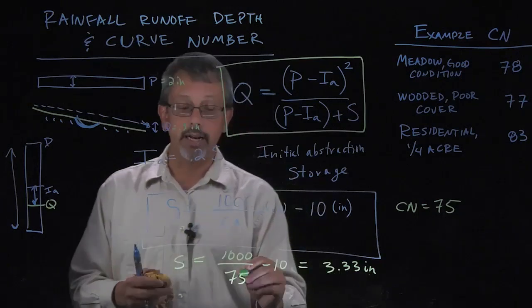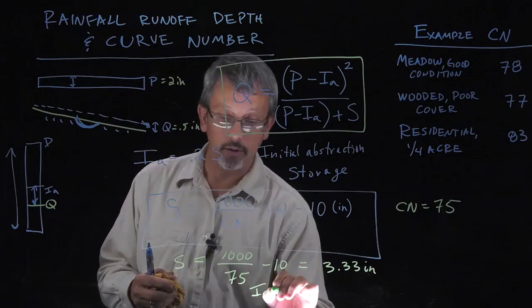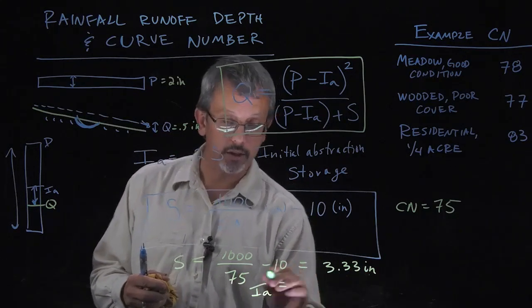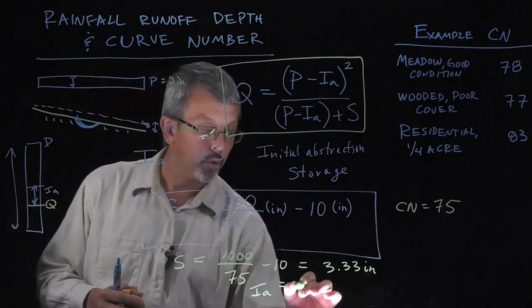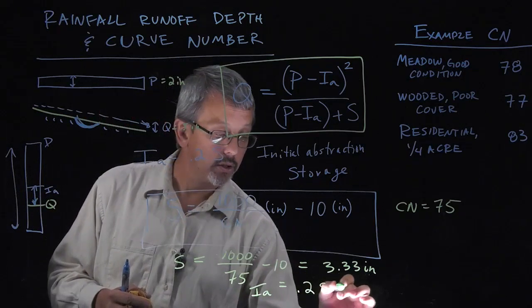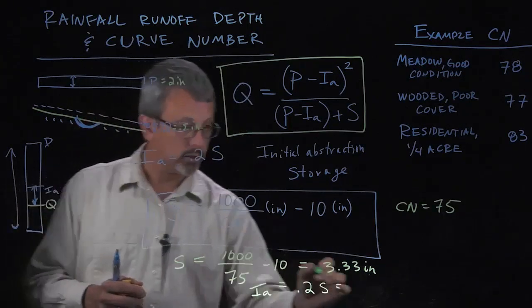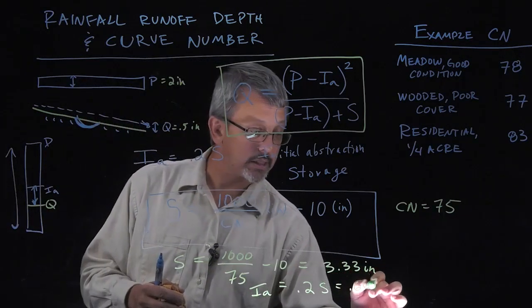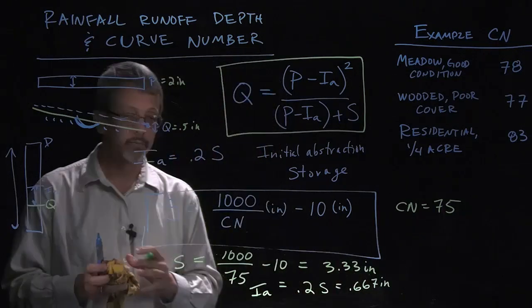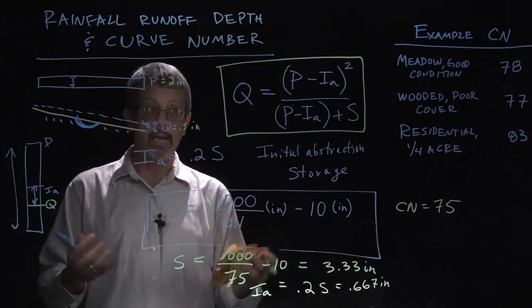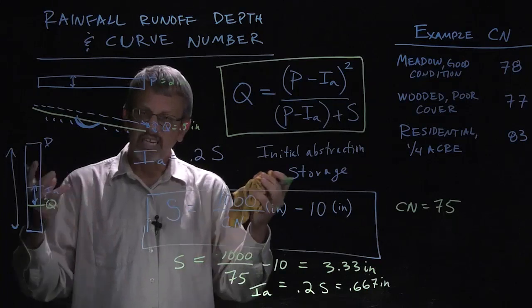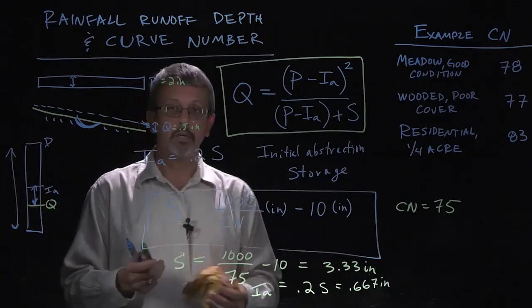We can calculate our initial abstraction from that value. Our initial abstraction here is going to be 0.2 times S, which is going to give us 0.667 inches. That's a value that's going to stick when we first calculate.